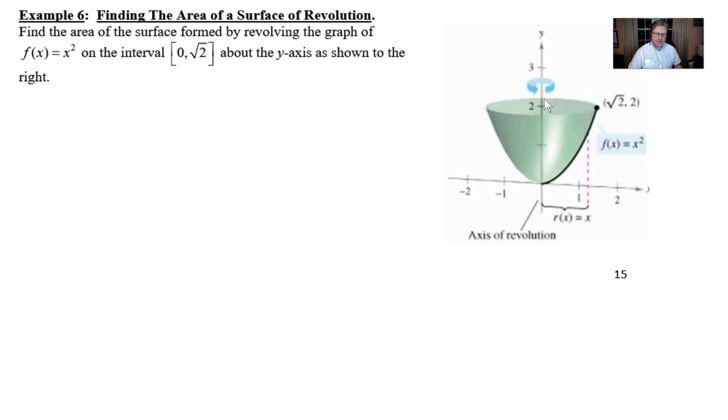And we see that nice function x squared. The revolution is certainly happening about the y-axis, and we're taking this outside area into consideration. That's what we're trying to find. We also have kind of a strange boundary here, this square root of two, which is a little bit bigger than one there.